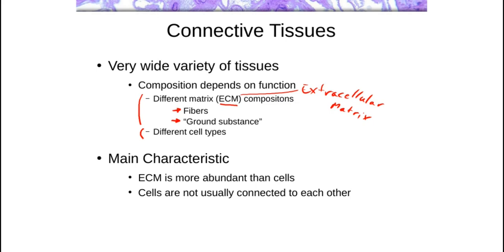The different types of tissues are categorized as connective tissues based on the fact that the ECM is the main component of the tissue. Connective tissue is a very large category — as long as they meet the main characteristic where the ECM is the more abundant component compared to the cells, they fall into this category. It's a connective tissue as long as we have more ECM than cells.